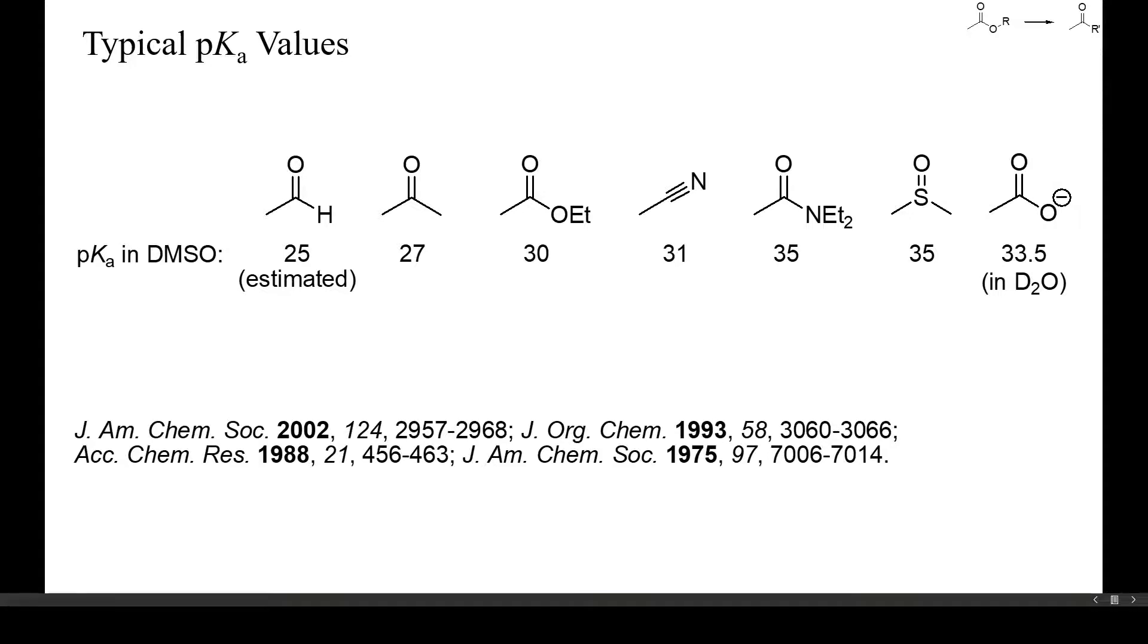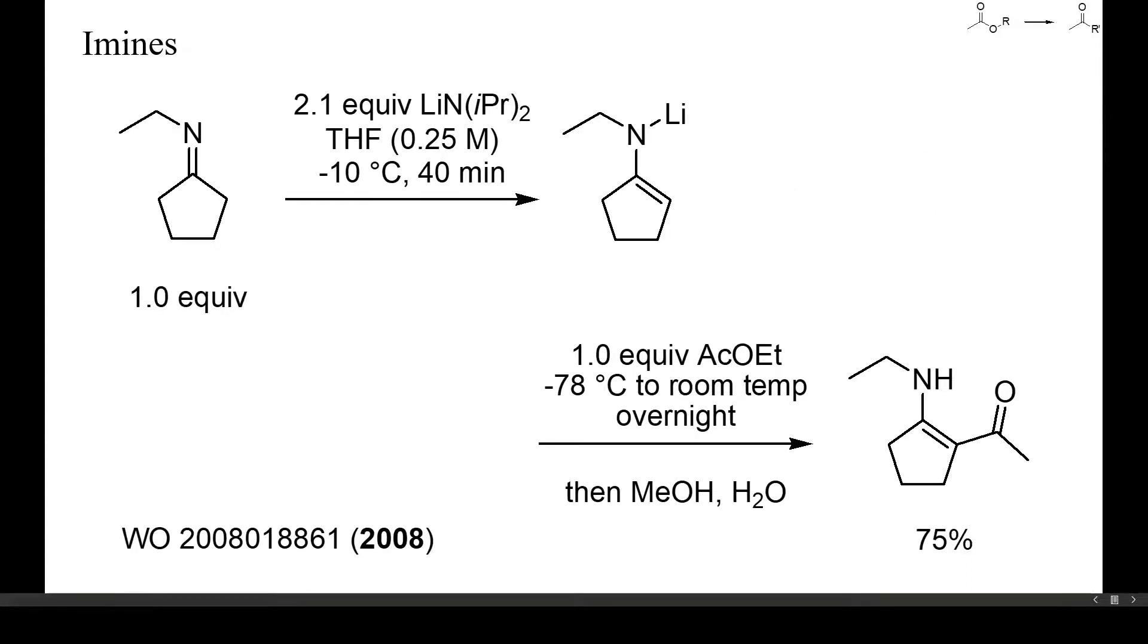It is therefore possible to add, say, methylated amides to enolizable esters and obtain high yields of ketones. In this example, a lithiated imine was acylated at carbon with ethyl acetate. The resulting enamine was more resistant to hydrolysis than the starting imine, but can still be converted into a ketone by acid-mediated hydrolysis.